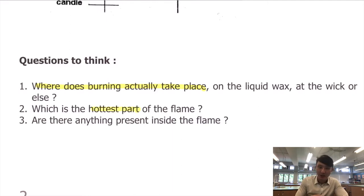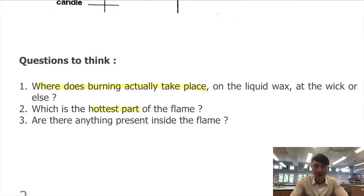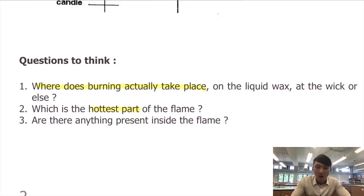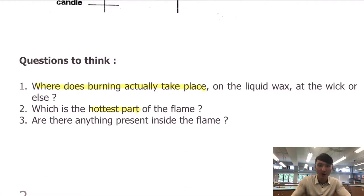For the second question: which is the hottest part of the flame? Is it at the middle of the flame? Is it at the top of the flame? Is it at the surrounding of the flame? Or, referring to different color zones of the flame, would it be the blue part, the red part, the yellow part, or maybe the dark part that is the hottest?